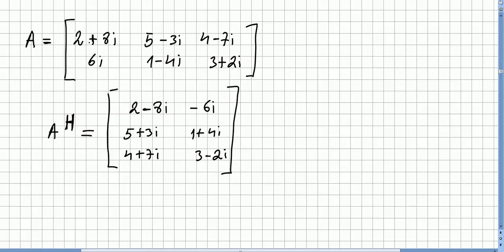So the Hermitian matrix will be this one. 2 plus 8, the conjugate will be 2 minus 8. 6i, the conjugate will be minus 6i. And then you transpose it. And you get minus 6i. So that will be 5 plus 3i, 1 plus 4i, 4 plus 7i, 3 minus 2i. So this is the Hermitian conjugate.